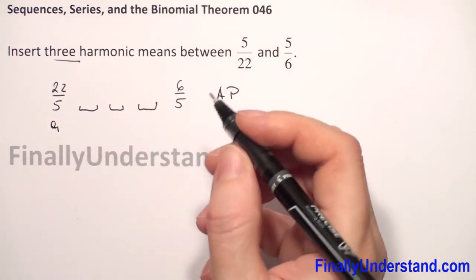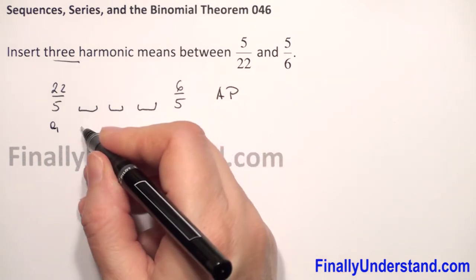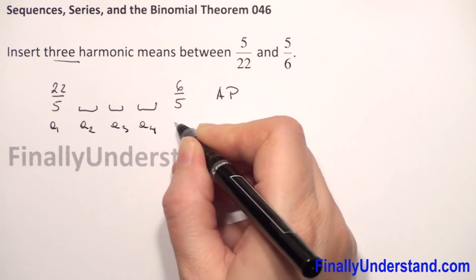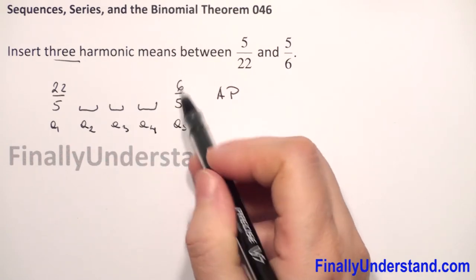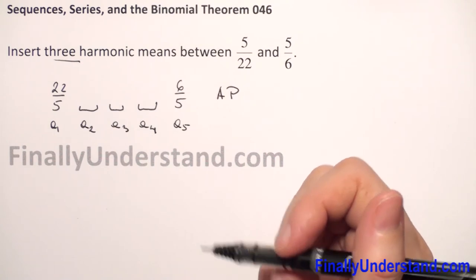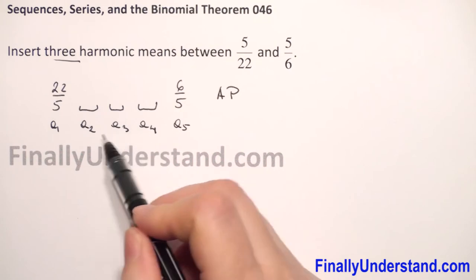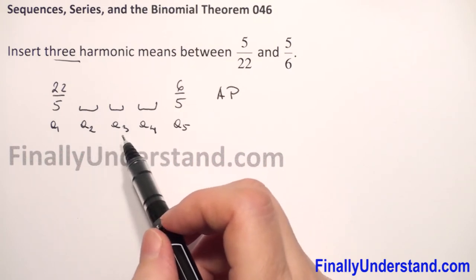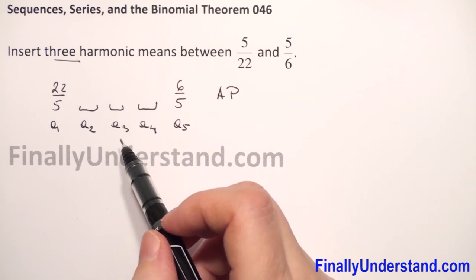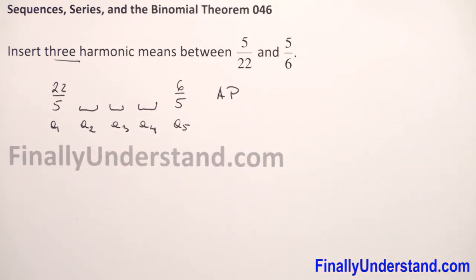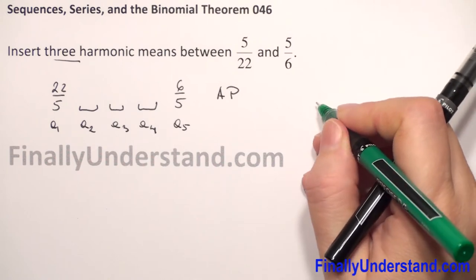This is an arithmetic progression with first term a1 and last term a5. We have a1, a2, a3, a4, and a5 — a five-term arithmetic progression. To find these three middle terms, we need to find d, the common difference. We have the first term and the last term, so let me remind you the formula for the nth term of arithmetic progression.